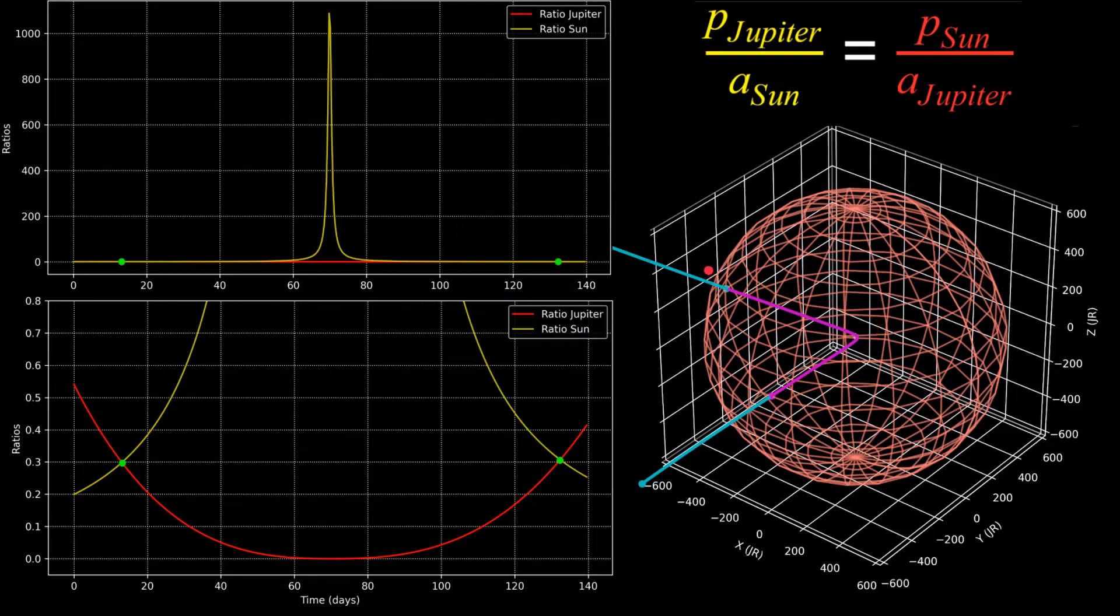For the plots on the left, the red ratio Jupiter is the ratio equation when Jupiter is modeled as a central body, and the yellow ratio Sun is when the Sun is modeled as a central body. We can see as Voyager 2 is coming in, the point where the two ratios are equal, which is the green dot here, is when Voyager 2 is coming into the sphere of influence here, and then exiting on the point of the right here, which corresponds to that point here.